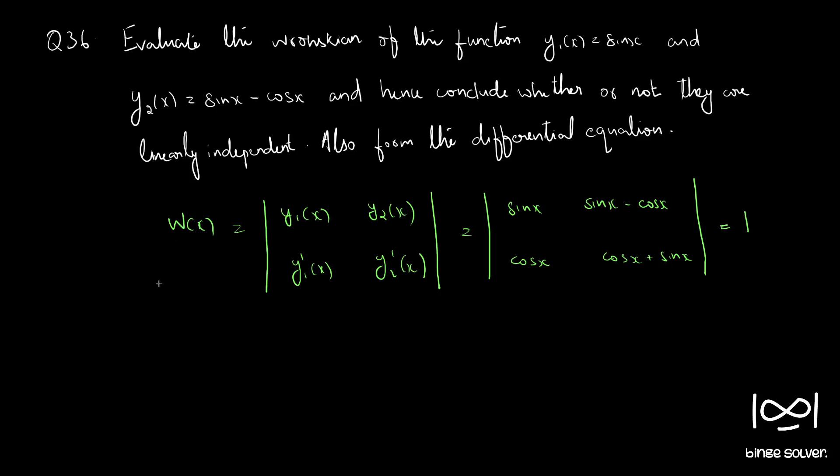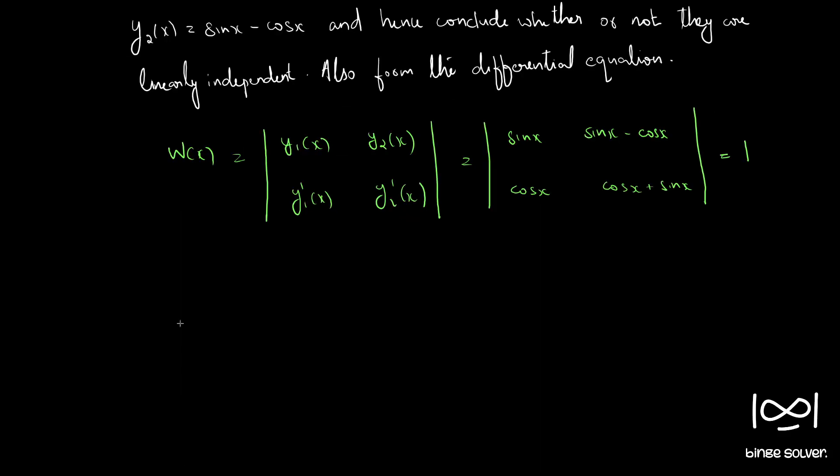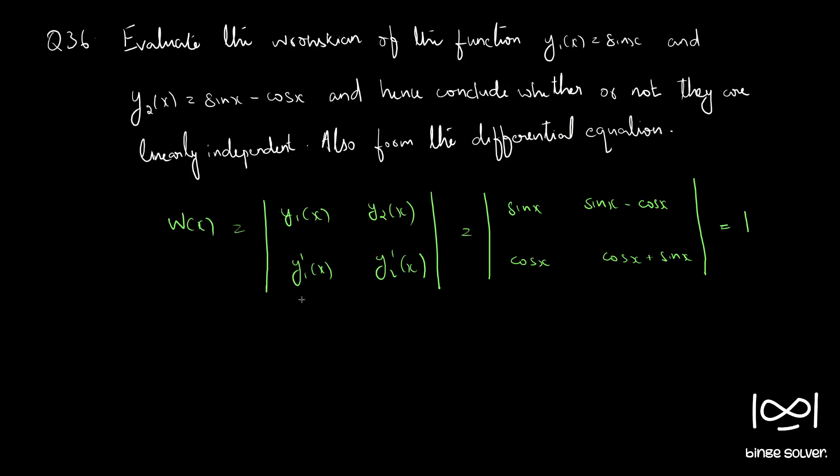The steps were given in the previous question, you can refer that if needed. So we got Wronskian as 1, so it is not equal to 0. So these solutions y1(x) and y2(x) are linearly independent. We got that part.